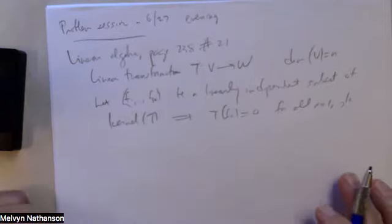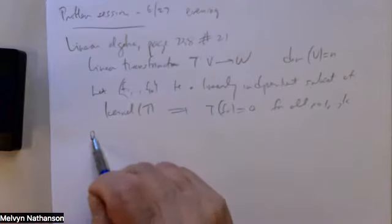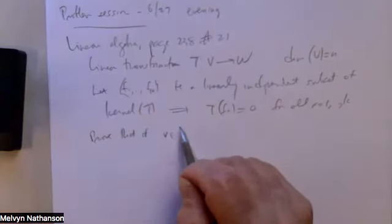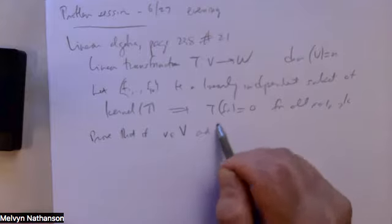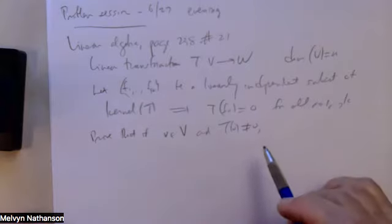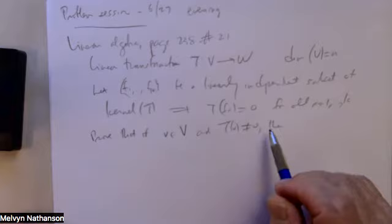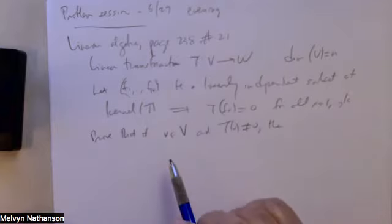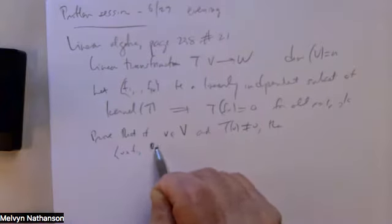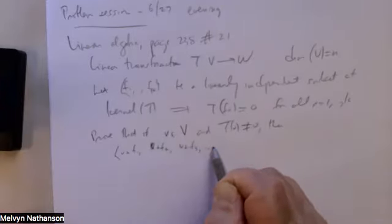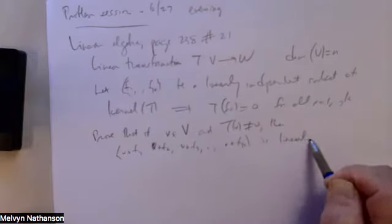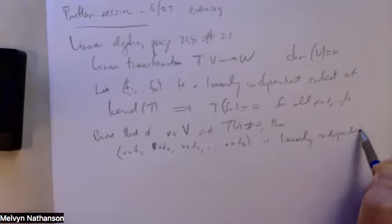There's a typo — it should say 'prove' — that if V is a vector in V and T of V is not zero, then if I take the set of vectors F1 up to Fk and add V to each of them, then V plus F1, V plus F2, V plus F3, up to V plus Fk is a linearly independent subset of V.